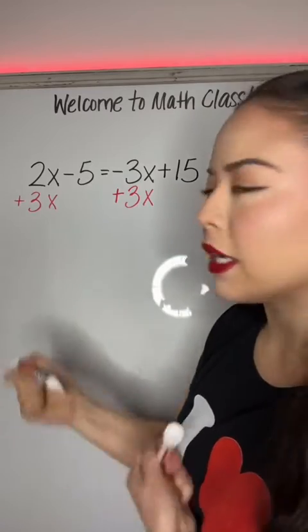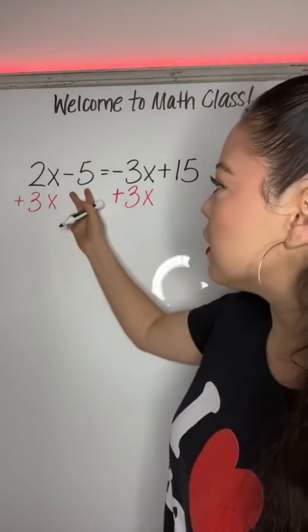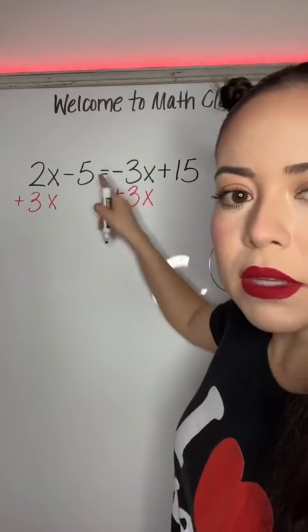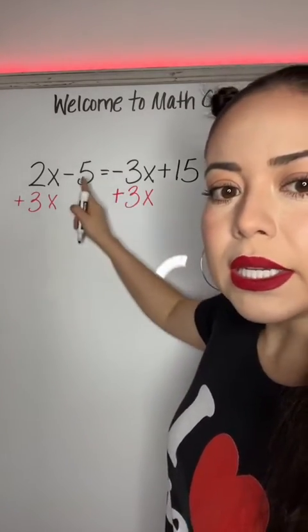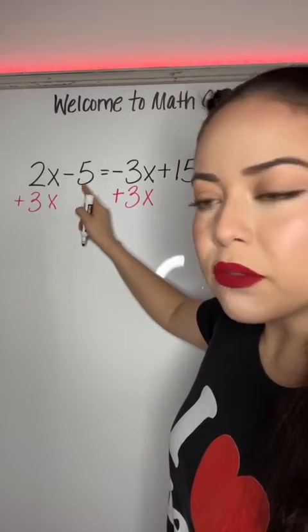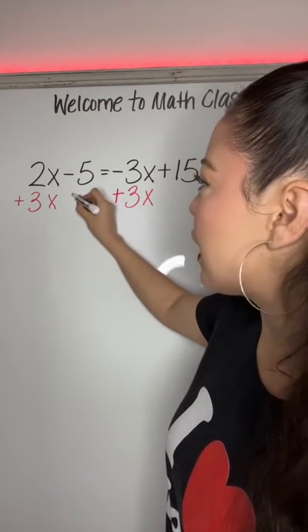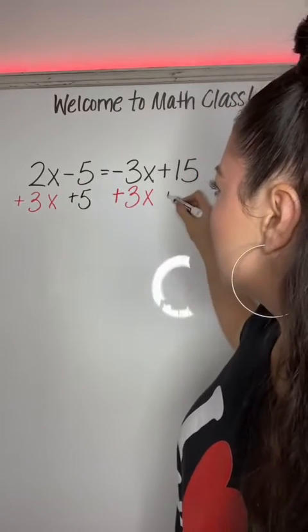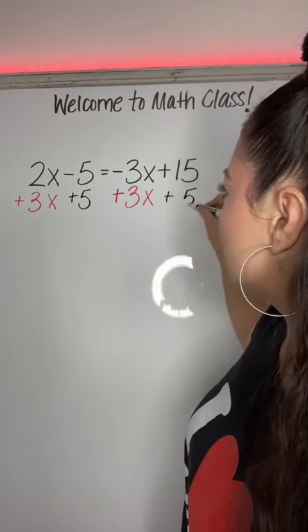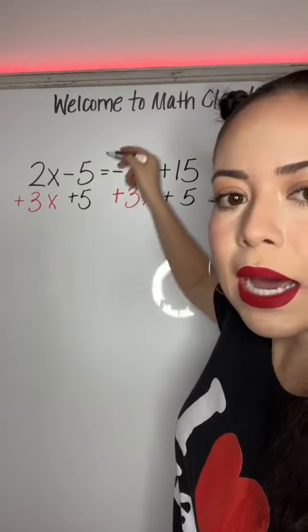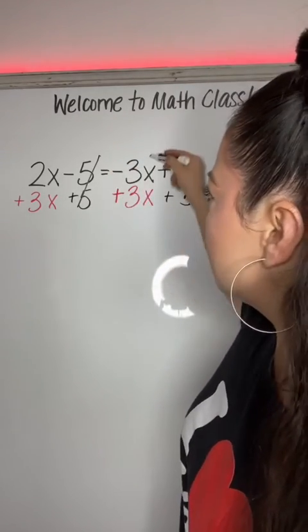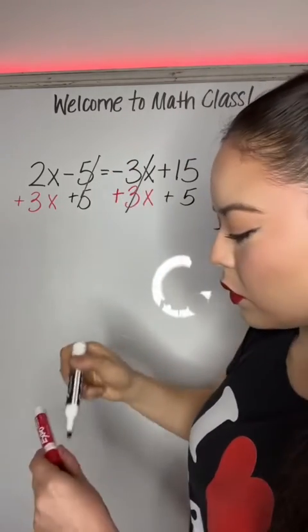Same thing with the negative 5. I want to move this over to the right side of the equal sign. Here it is minus 5, so I'm going to add it away. Again, the goal is to completely cancel — they need to add up to 0, so cancel and cancel.